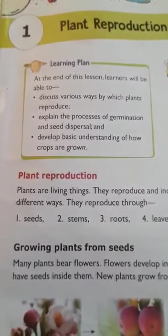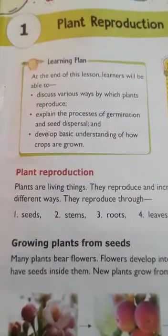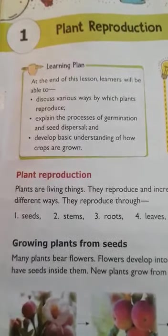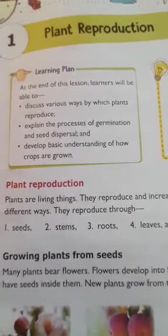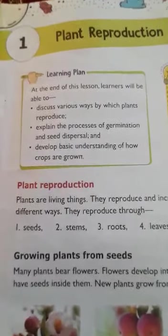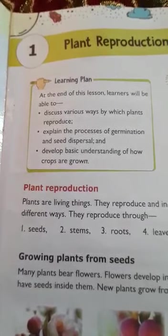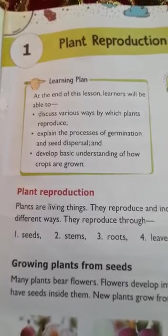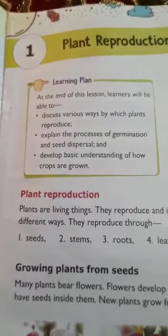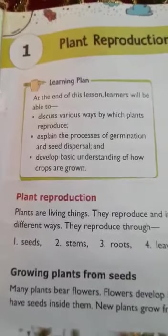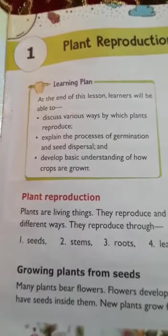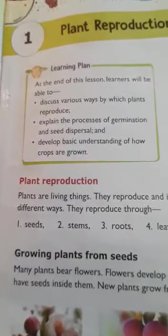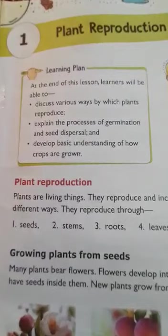In your previous classes you have studied about the properties of living things and non-living things. In our surroundings we find living and non-living things, both natural and man-made, which you studied in class 3 and 4. So in living things, what are the properties? Living things need food and water to grow, they need to breathe air, they grow bigger in size, they can respond to changes, and they reproduce.